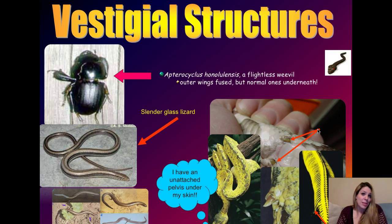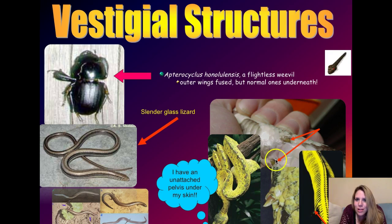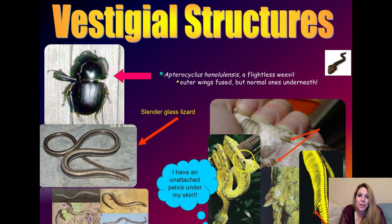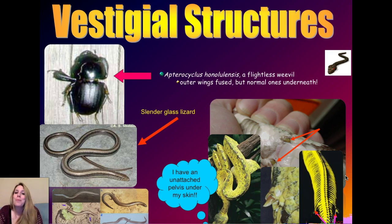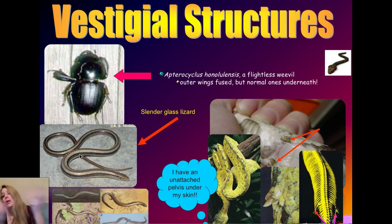Modern snakes also show vestigial structures. If you're familiar with pythons, if you turn them on their belly you'll see little claws sticking out, especially in females — these are vestigial elements of what were legs in their reptilian ancestors. In a boa constrictor, you can see an unattached pelvis under the skin, and in an X-ray you can see where the legs would have attached. Snakes have descended from lizards — they're not lizards themselves — but looking at slender glass lizards and modern snakes, you can really see how over evolutionary time selection has driven these animals to get rid of legs and take to slithering.